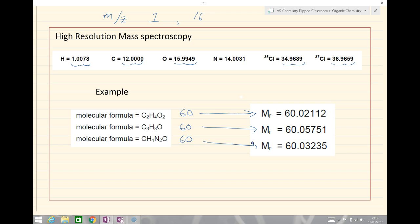If we are asked to work it out in an exam, for example, perhaps you might have something like propane, C3H8, and carbon dioxide. Well, both of these would have the same mass to charge ratio of 44 in a normal mass spectrometer.